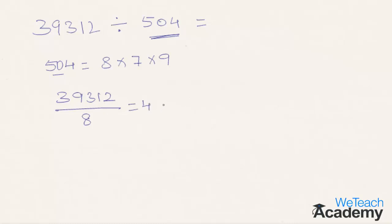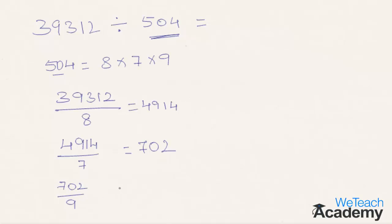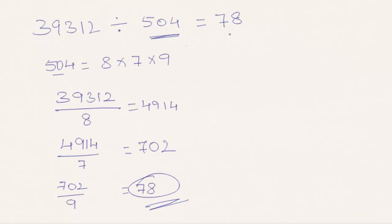39312 divided by 8: 8 fours is 32, 8 nines is 72, then 8 ones is 8, so 4914 is the result. Now 4914 is to be divided by the second factor, that is 7. We get the result 702. So 4914 divided by 7 is 702. Now 702 is to be divided by the third factor, that is 9. 702 divided by 9 gives 78. So 78 is the final result for 39312 divided by 504.